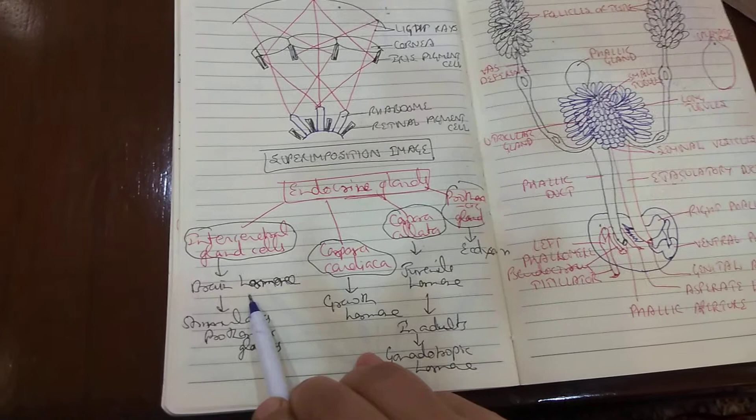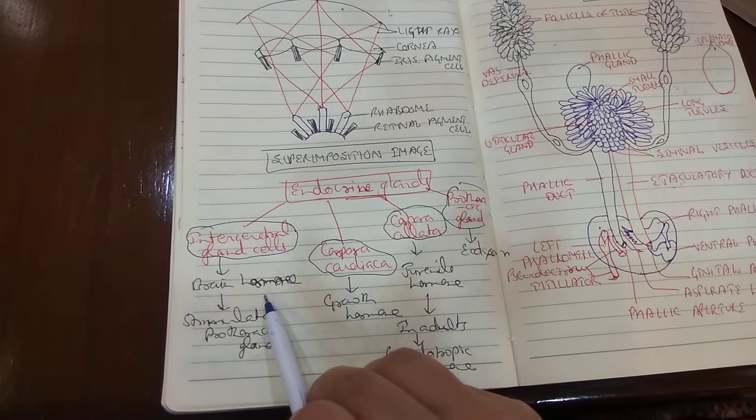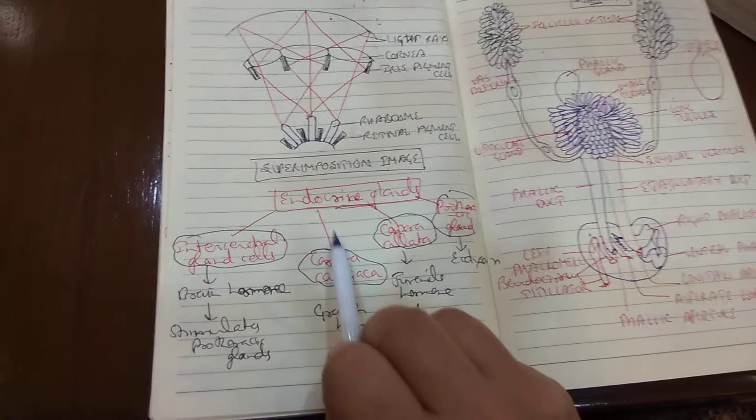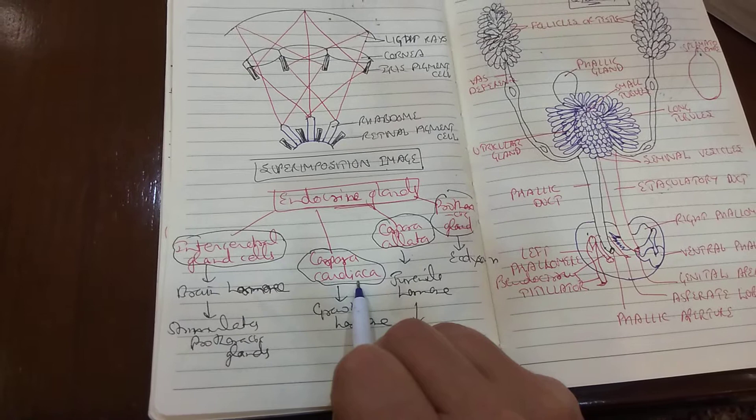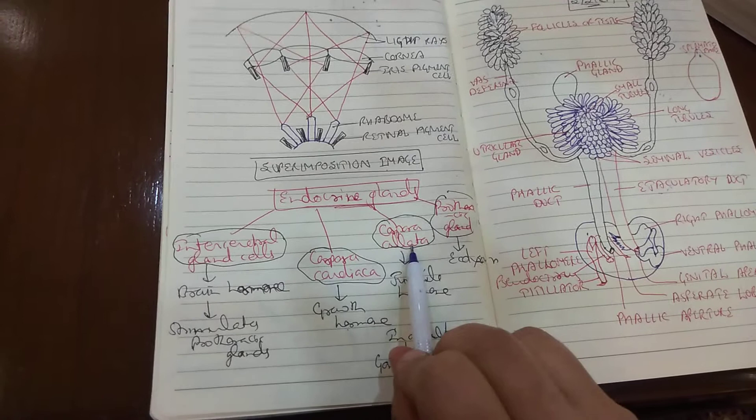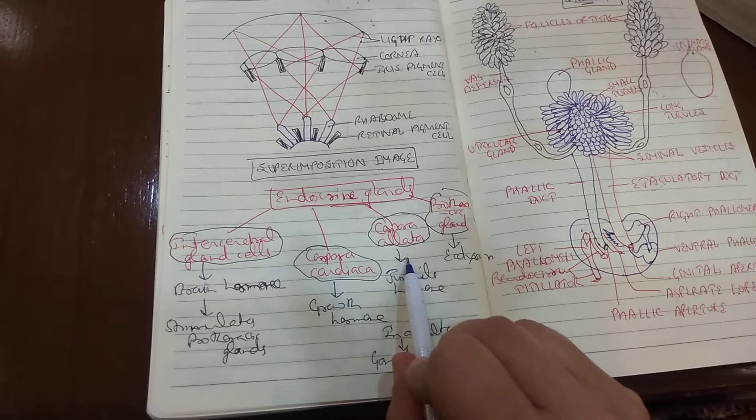The brain hormone also determines the rhythm of activity. Cockroaches are basically nocturnal animals — they are active during the night and dormant during the daytime. Then comes the corpora cardica — these are a pair of rod-like bodies situated on the sides of the esophagus; they secrete growth hormone which helps in the growth of the cockroach.